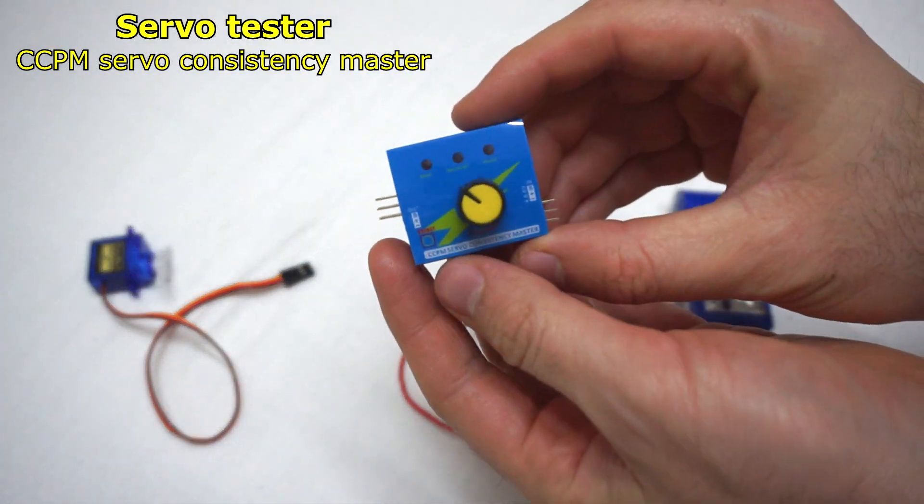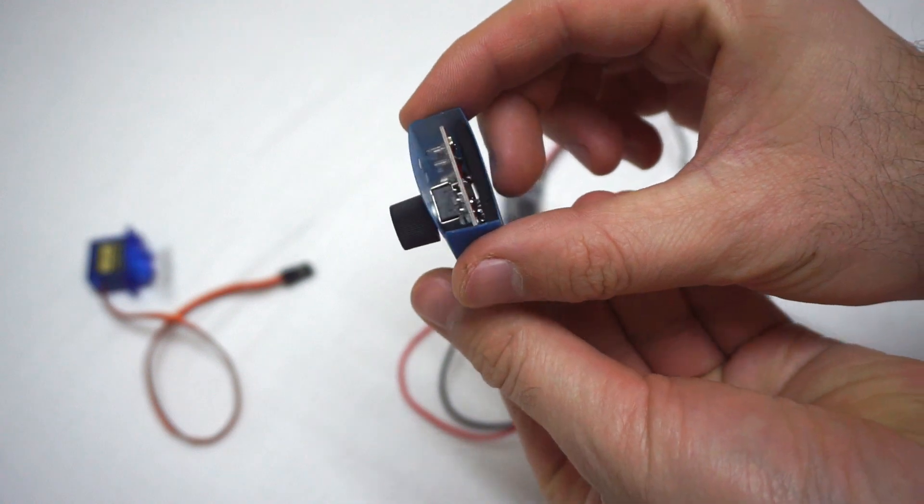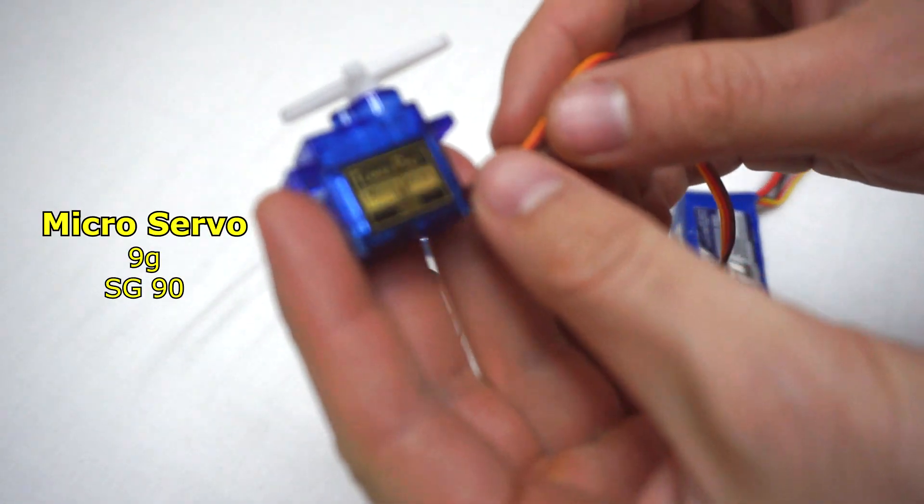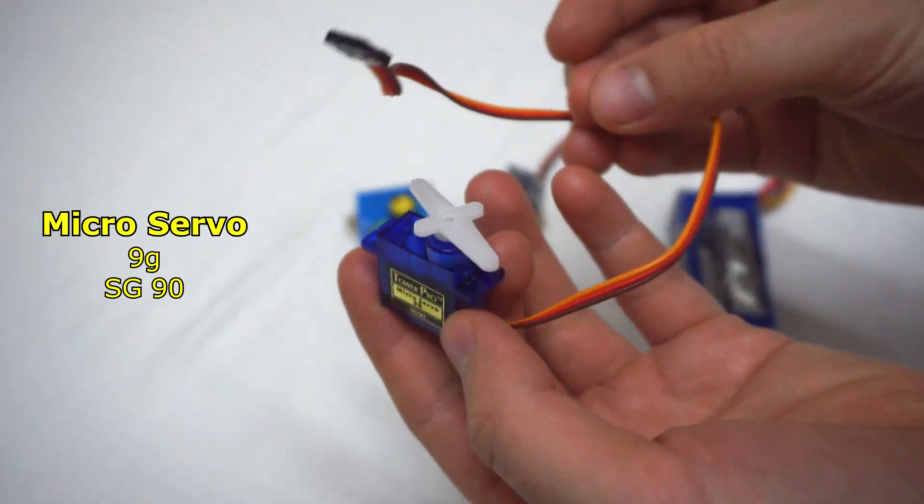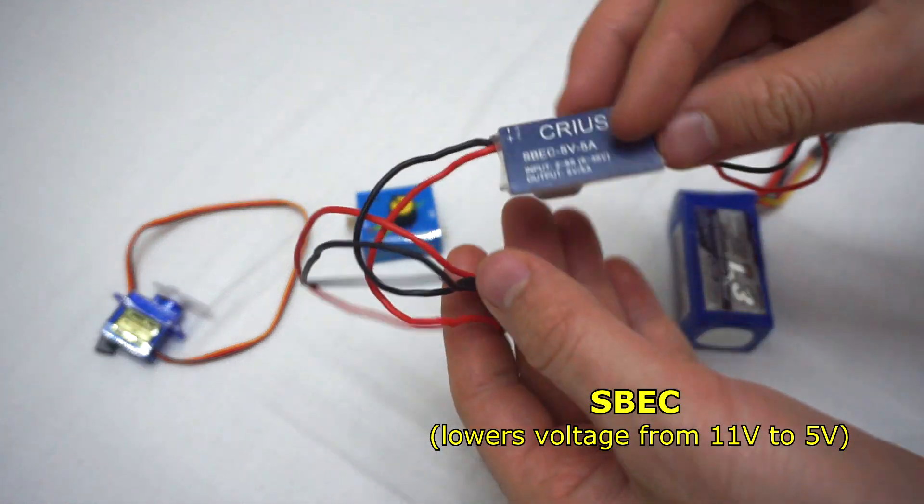Let's test this device. This is a servo tester, it looks like this, and I will power and control a servo with it. That's the servo that I will use. It has three wires.